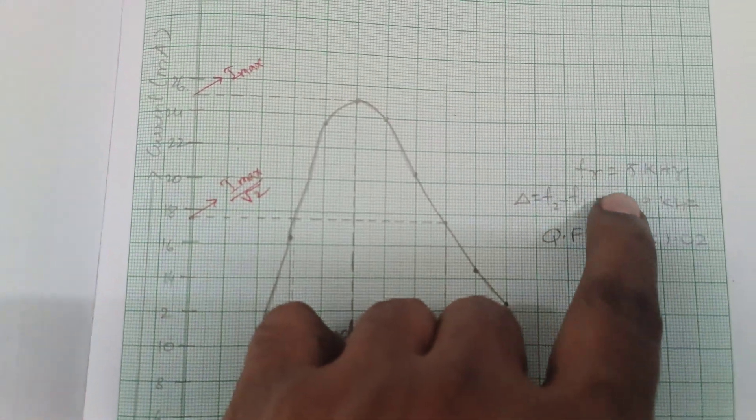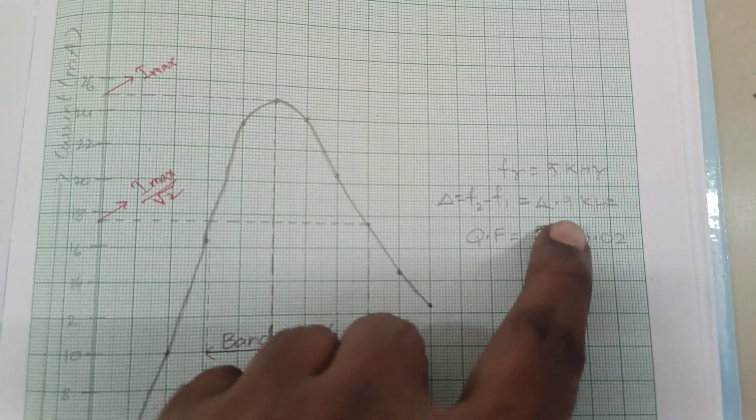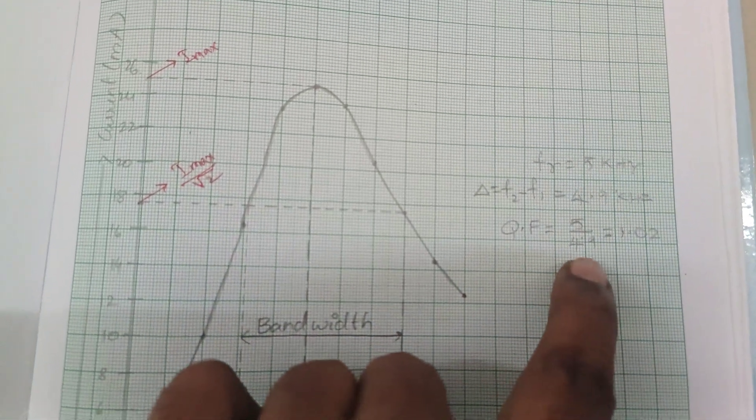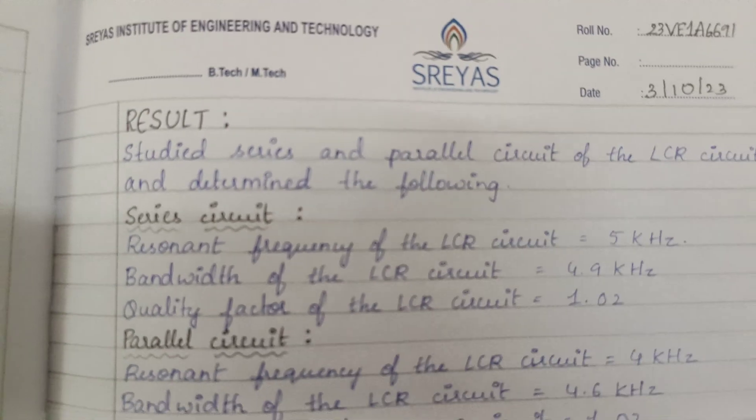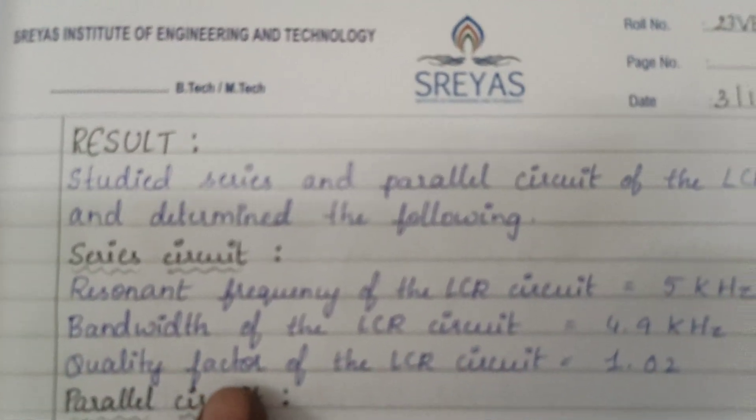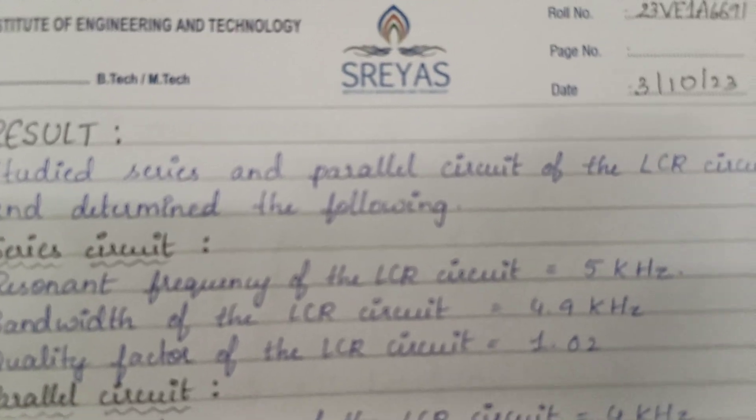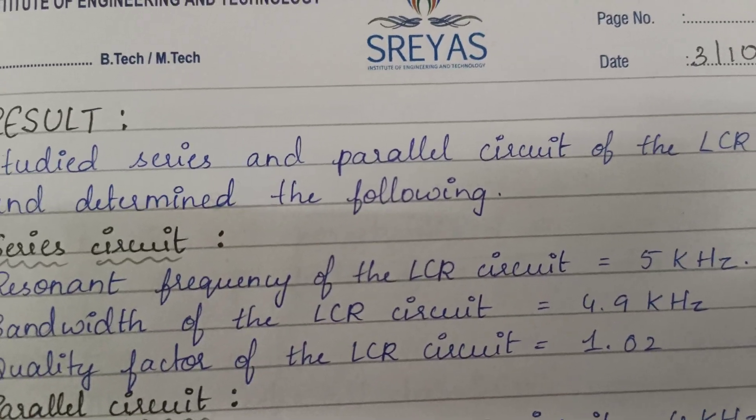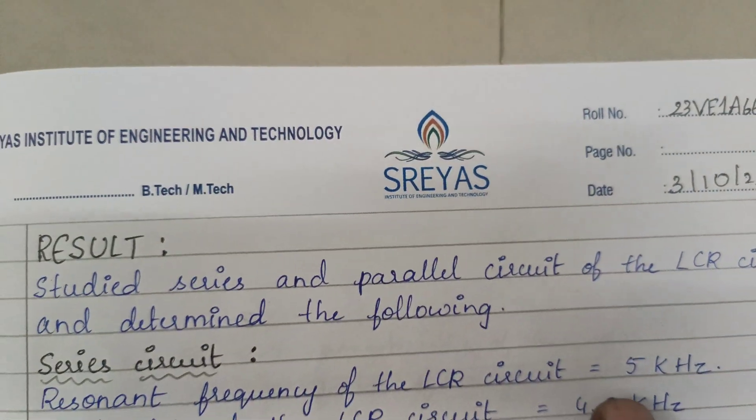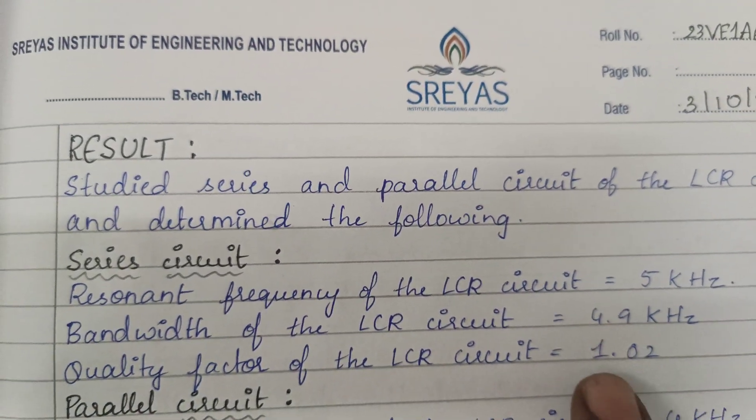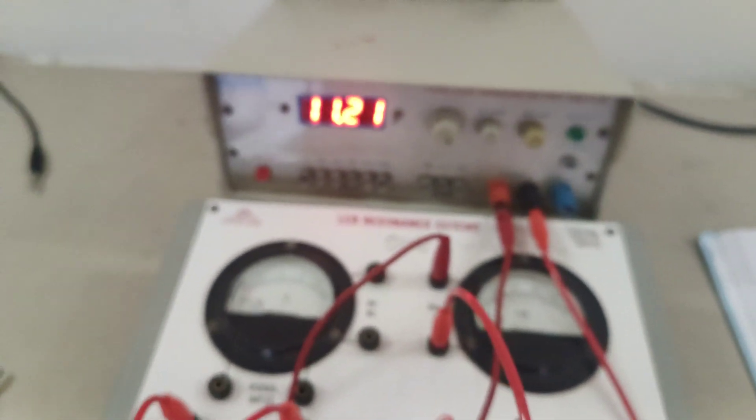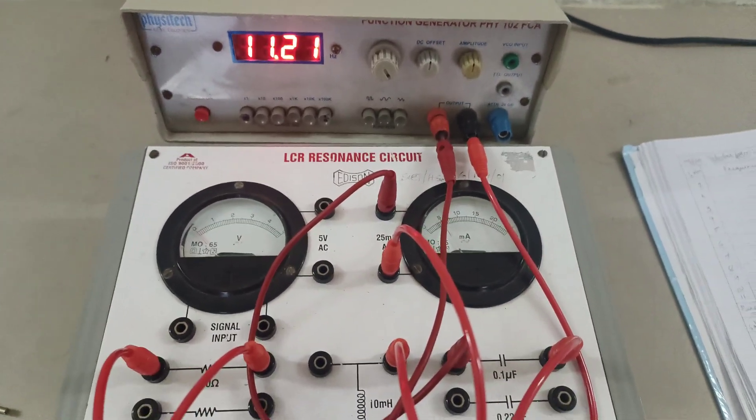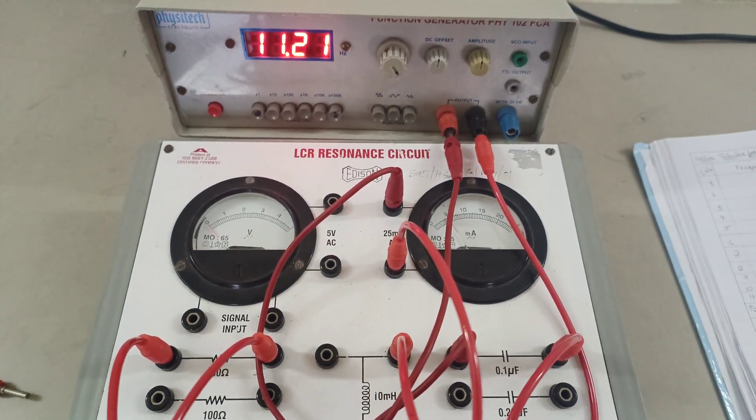The resonant frequency here is five kilohertz, bandwidth is four point nine, and quality factor is one point zero two. This is in series combination. The final values are five kilohertz, four point five kilohertz, four point nine kilohertz, one point two. This is all about LCR series circuit.